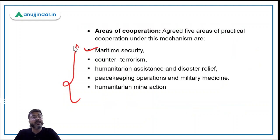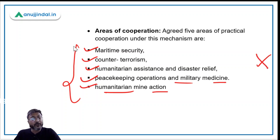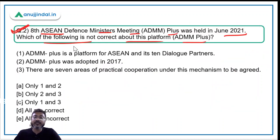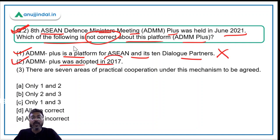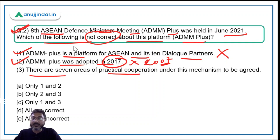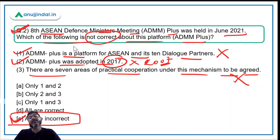The areas of cooperation under ADMM+ include maritime security, counter-terrorism, humanitarian assistance and disaster relief, peacekeeping operations, military medicine, and humanitarian mine action. Coming back to the question — option A says 10 dialogue partners, but there are 8, so that's incorrect. Option B says it was adopted in 2017, but it was 2007, so that's also incorrect. All statements are incorrect, making 'all of the above' the correct answer.